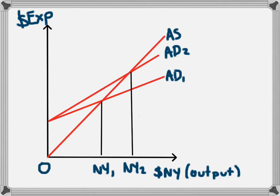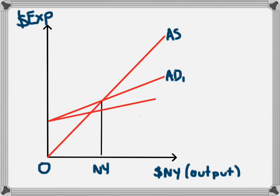If households begin to save more, the opposite will happen. The slope of the aggregate demand line will get flatter. This will lead to a decrease in aggregate demand from AD1 to AD2, and this will lead to a decrease in the national income level from NY1 down to NY2.